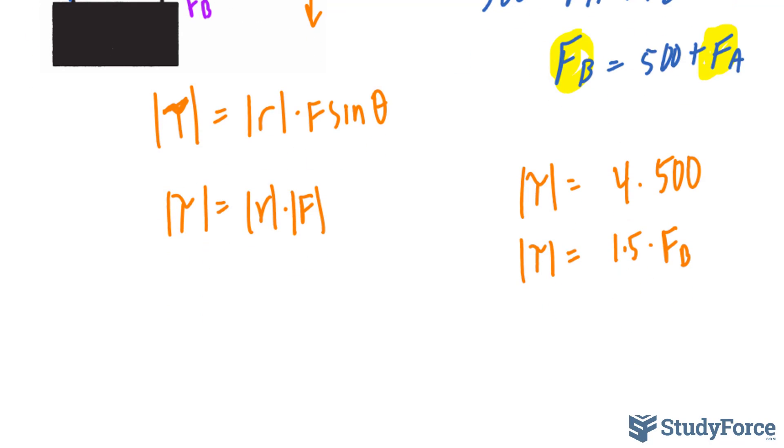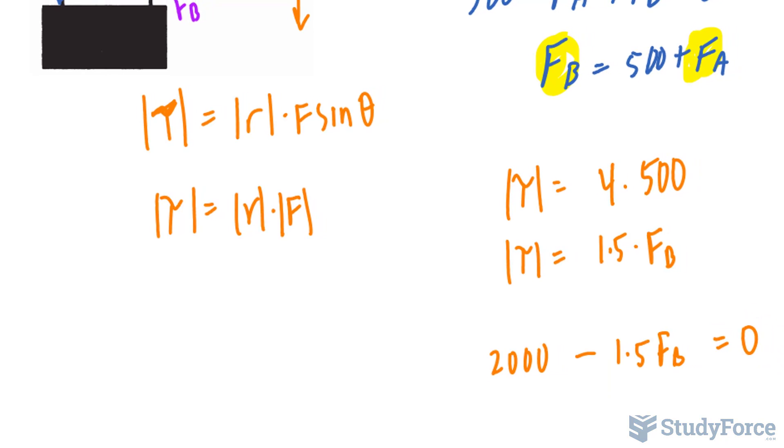Since they're acting in opposite directions and we're going to be adding these, I'll write down 2000, because 4 times 500 is 2000, minus 1.5 F sub B. I made this minus 1.5 because it's acting in the opposite direction, and this should sum up to 0.